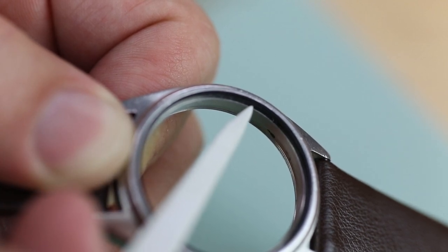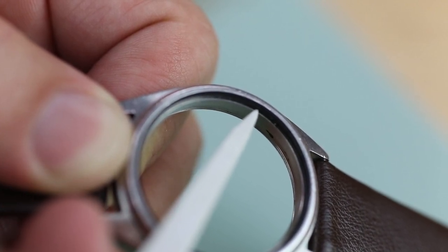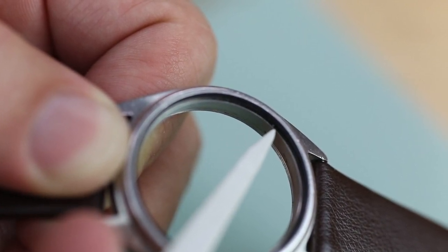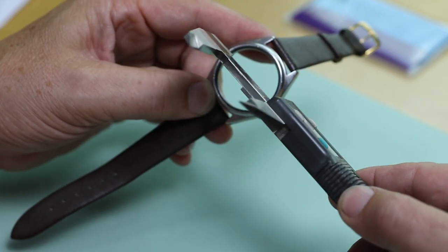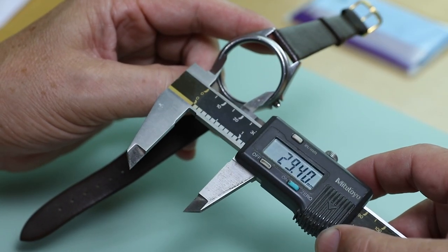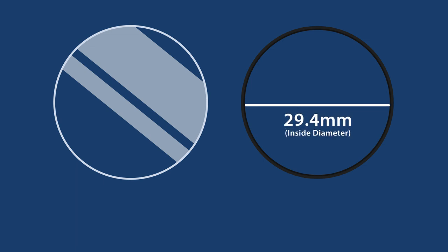When ordering crystals to fit a gasket, order a size that's one-tenth of a millimeter larger than the gasket measurement in order to get the proper fit. In this case, since the gasket measurement was 29.4 millimeters, you would order a round crystal with a diameter of 29.5 millimeters.